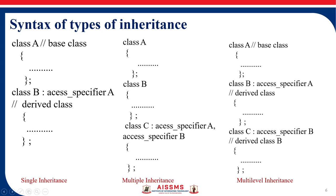Next we have multiple inheritance, where a class can inherit from more than one class. Here we have class A and class B as base classes, and class C as the derived class. The syntax is: name of derived class, colon, access specifier for the first base class, comma, access specifier for the second base class. So class C inherits properties of both class A and class B.